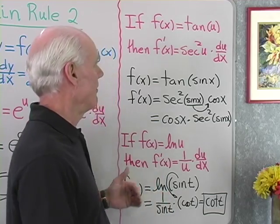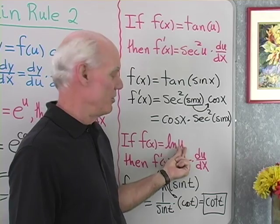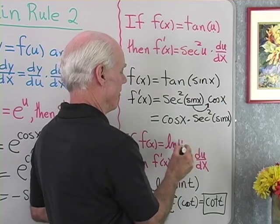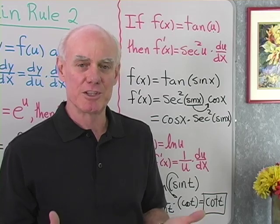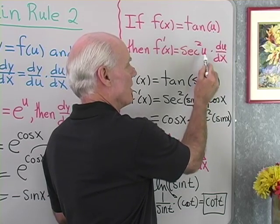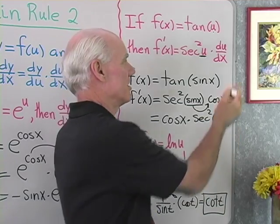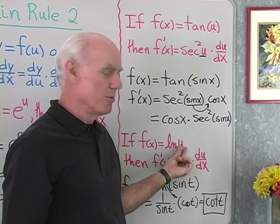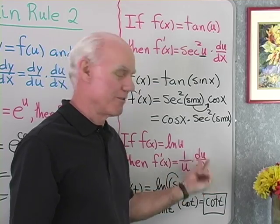The idea is this: you have tangent of u, or log of u, or e to the u — this is the argument of that function. First you differentiate the function and keep the argument the same, then you differentiate the argument. So the derivative of tangent is secant squared; I keep the argument the same, then I differentiate it to get du/dx. Same thing with log u: the argument is u, so when I differentiate I get 1 over u, then I differentiate u.